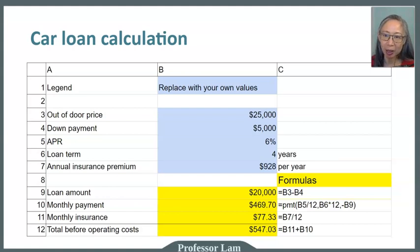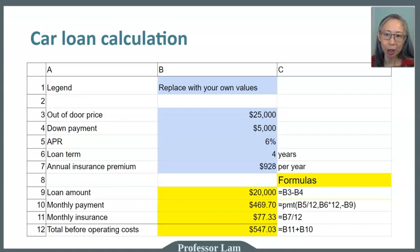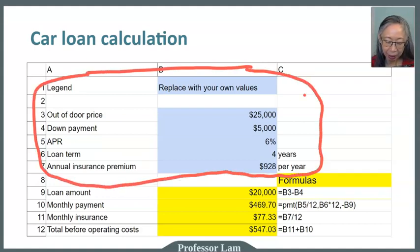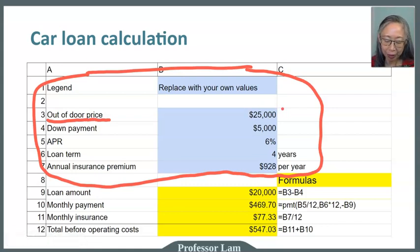This is the model we're going to set up. I encourage you to take a good look at this model, pause the video, write down the important elements, and then start up your own Excel or Google Sheets so that we can work on this together. The first thing you want to do is type in the blue area. Here is our example: we are buying a car.